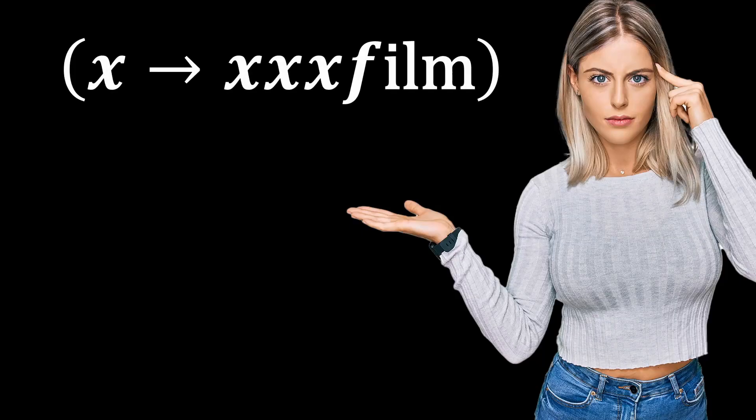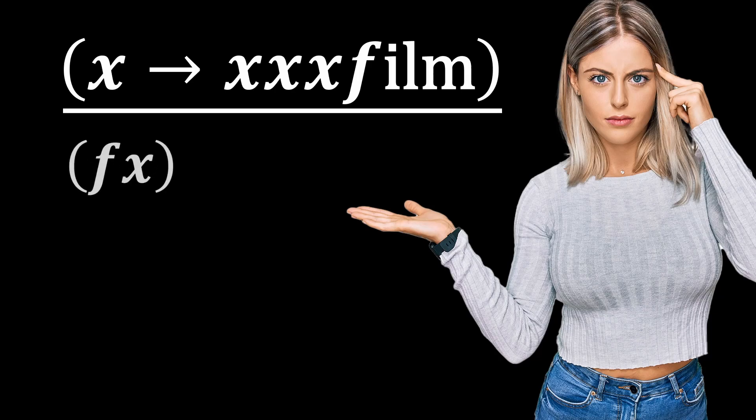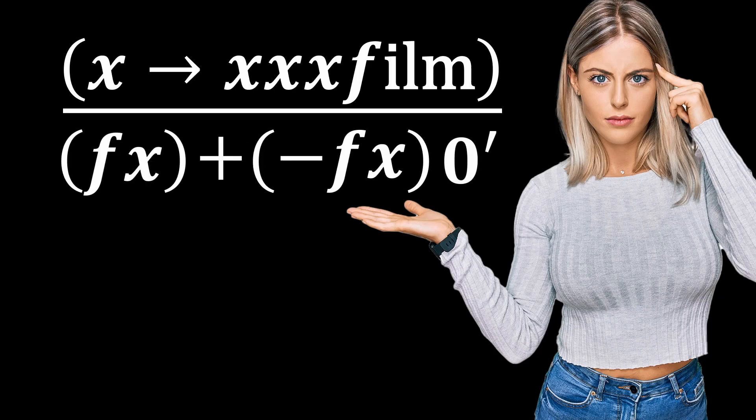If you let the variable x approach a triple x-rated film and then divide by f times x and then add its negative and then multiply by the derivative of zero and set that expression equal to triple delta,